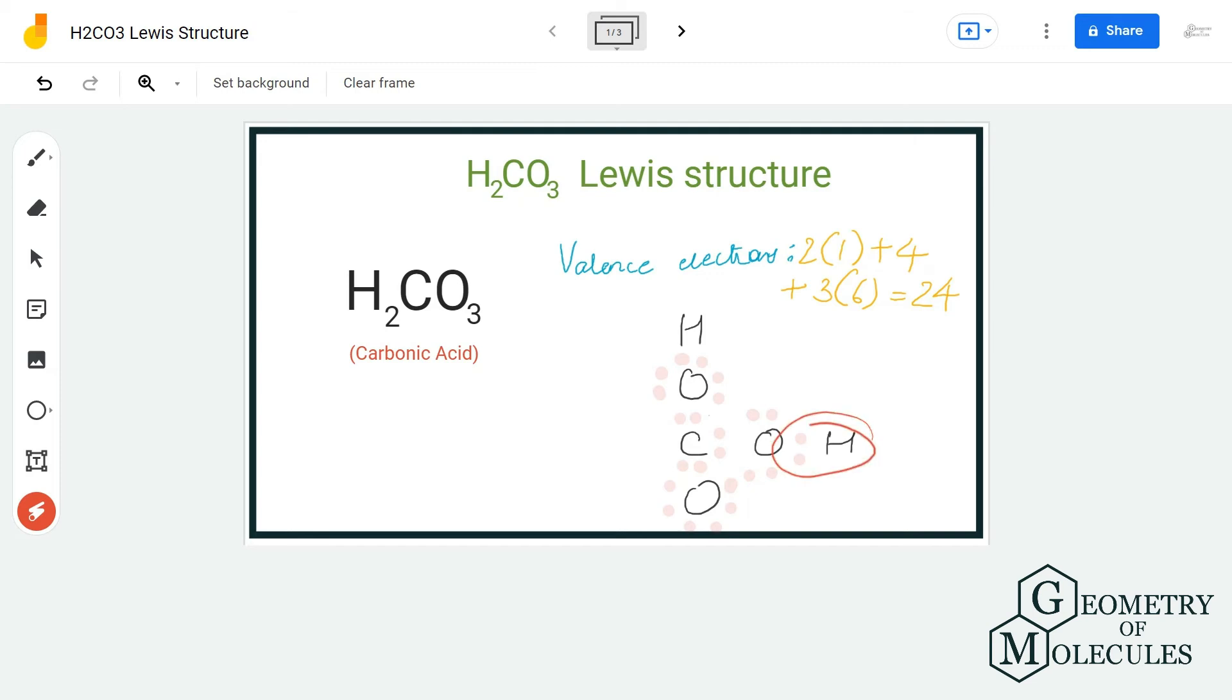Both hydrogen and oxygen atoms over here have complete octets—oxygen has eight valence electrons in its outer shell and hydrogen atoms have two valence electrons in their outermost shell. But when you look at this carbon atom, it doesn't have a complete octet; it just has six valence electrons. To help this carbon atom have a complete octet...